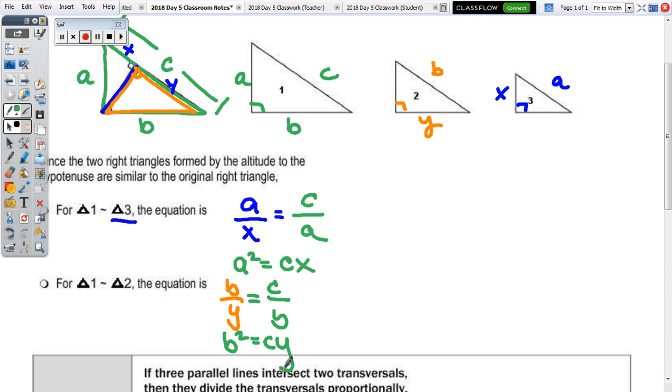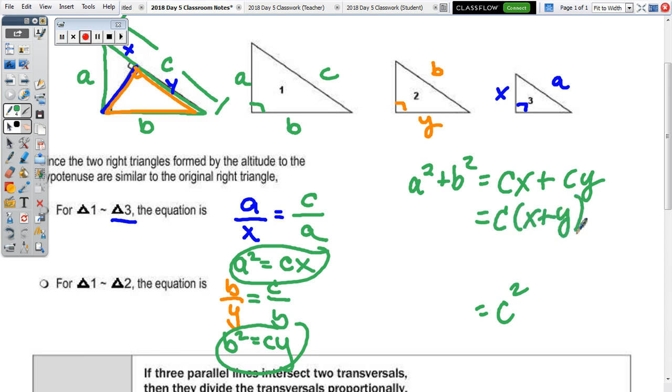So, using the fact that A squared equals C times X, we want to show A squared plus B squared results in C squared. So, if I substitute, A squared plus B squared really equals CX plus CY. And if you notice, CX and CY have a common factor of C. So, if we factor out the C, this is the same as C times X plus Y. And what does X plus Y equal to? If we go back to the first triangle, that's C. And C times C is C squared.